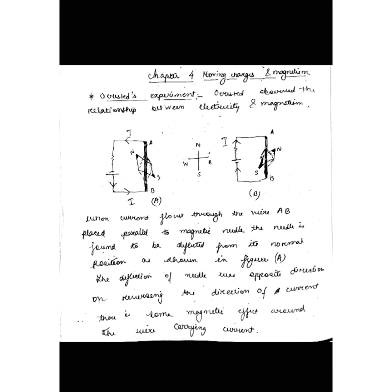A magnetic needle is simply used to detect the magnetic field. If there is a magnetic field, the needle will get deflected in the direction of the field. It acts as a detector — if there is a magnetic field, it will respond to it.